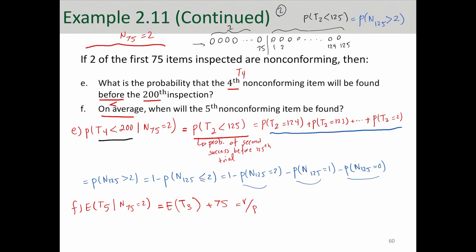So R divided by P plus 75, that is 3 over 0.03 plus 75, which is 175. So on average, we will see the fifth non-conforming on the 175th observation or inspection.